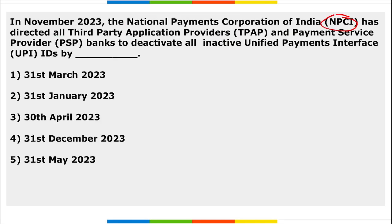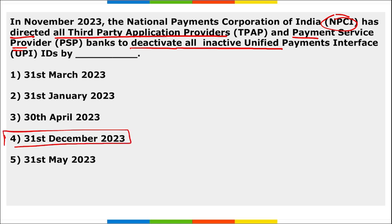Next: NPCI — National Payment Corporation of India — has directed all third-party application providers and payment service provider banks to deactivate all inactive UPI IDs by 31st December 2023. All UPI IDs not in use will be deactivated. Apps that will deactivate UPI IDs include Google Pay, Paytm, and PhonePe.